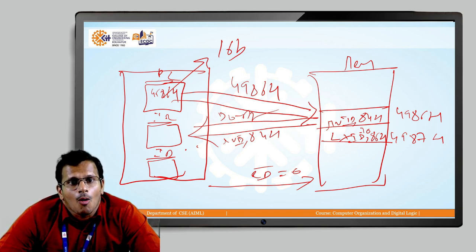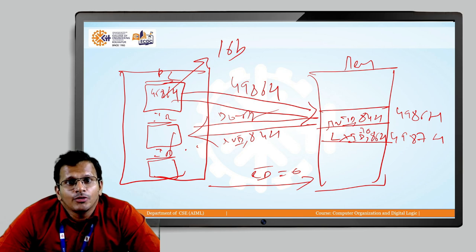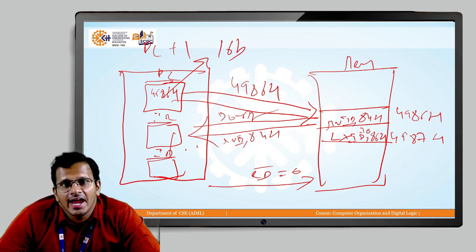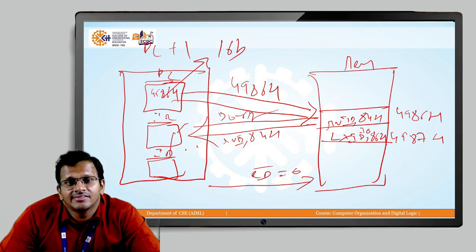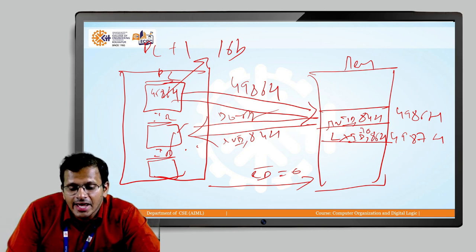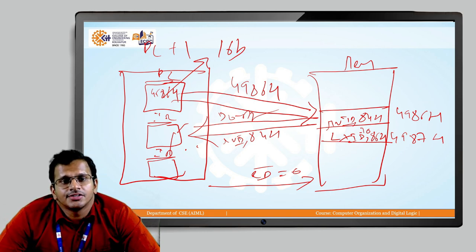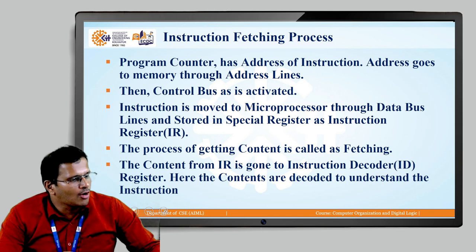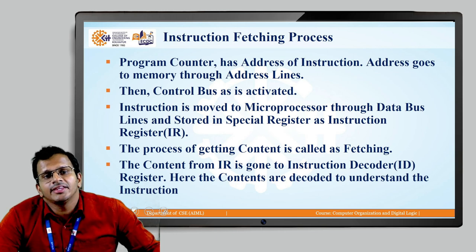Every instruction has its own opcode. During the process of instruction decoding, the Program Counter automatically increments by 1. So when the instruction from location 4986H comes to the Instruction Register, the Program Counter by itself increments by 1, making the next address 4987H. This is the process of instruction fetching and decoding in the microprocessor — the content is moved from the data bus and stored in the Instruction Register, which is known as fetching, then decoded in the decoder.